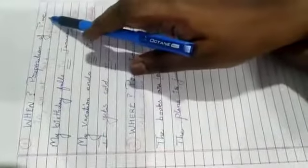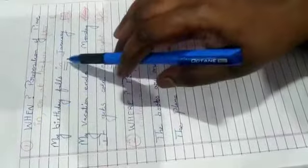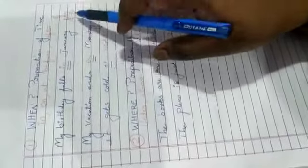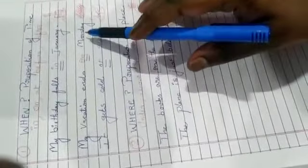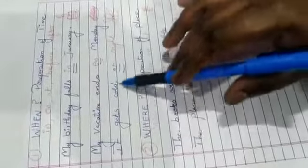Let's see briefly in the next page. When means preposition of time - in, on, at, before, after. Look at the sentence: my birthday falls in January. This simple cake I've drawn to mention my birthday falls in January. So this is when - when it falls in January. Next, my vacation ends on Monday. When it goes complete on Monday. Next, it gets cold at night. When it gets cold - at night.